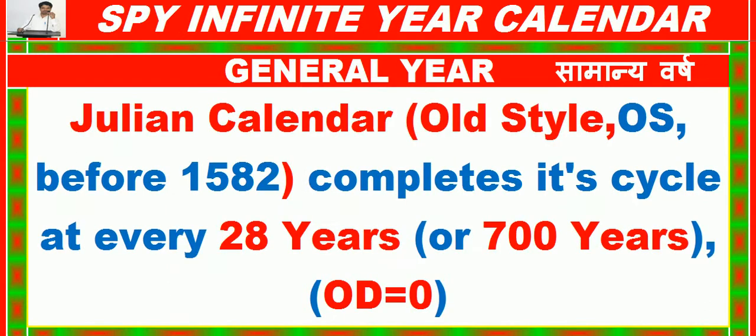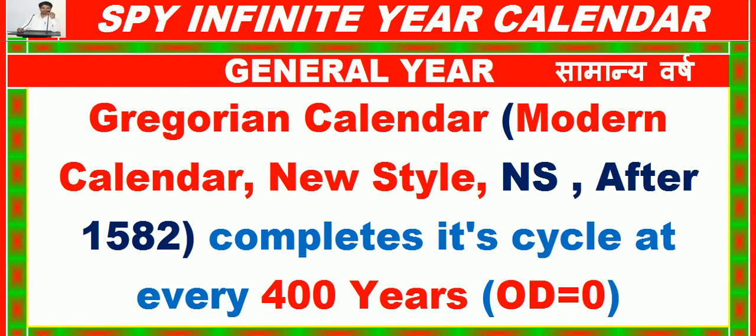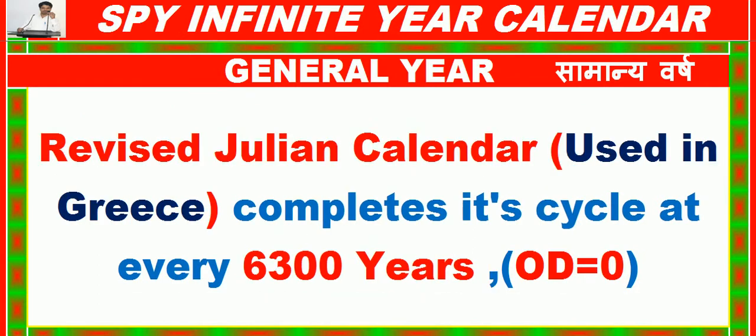The Julian Calendar (Old Style, before 1582) completes its cycle every 28 years or 700 years (OD = 0). The Gregorian Calendar (Modern / New Style, after 1582) completes its cycle every 400 years (OD = 0). The Revised Julian Calendar used in Greece completes its cycle every 6300 years (OD = 0).